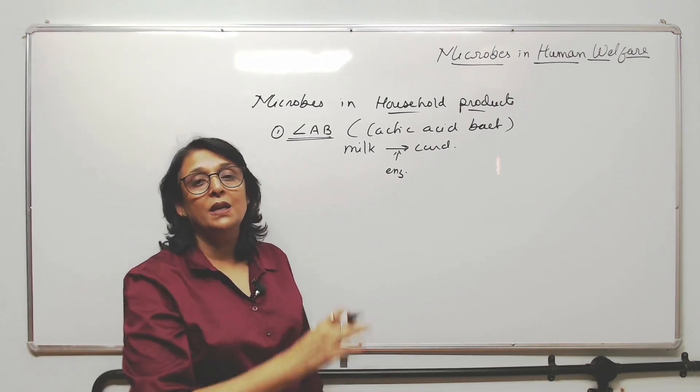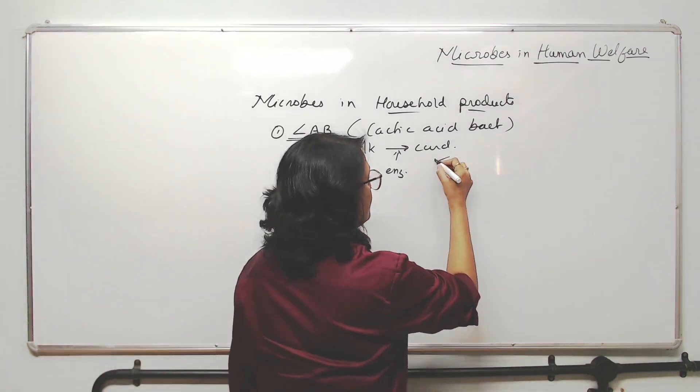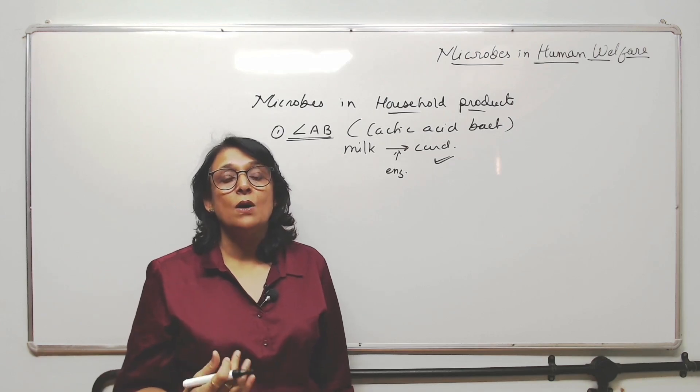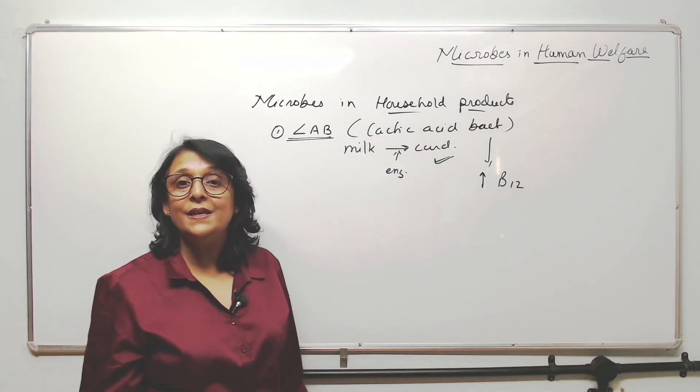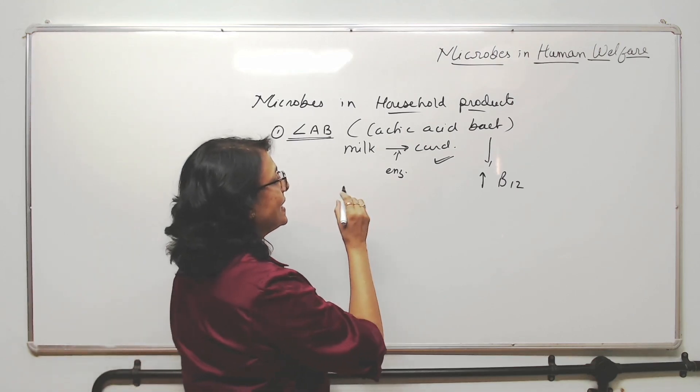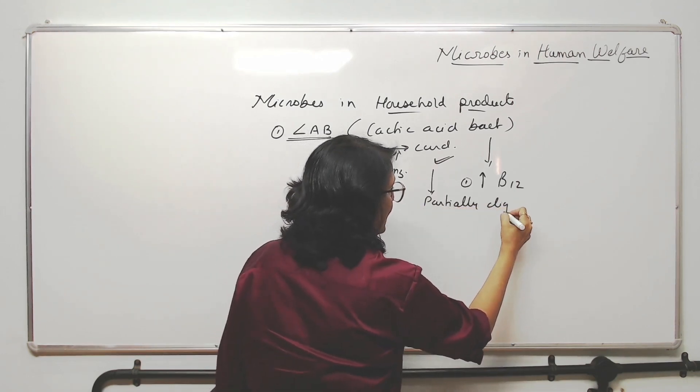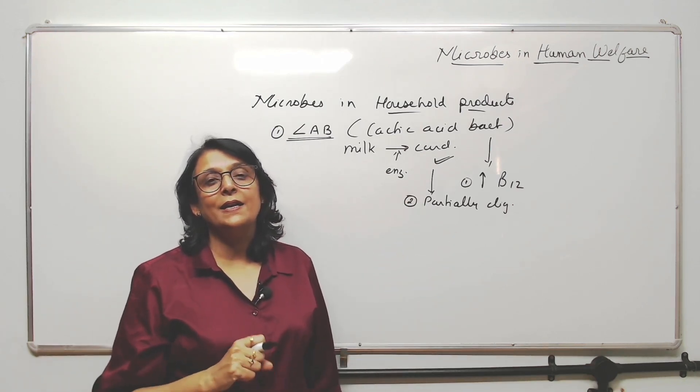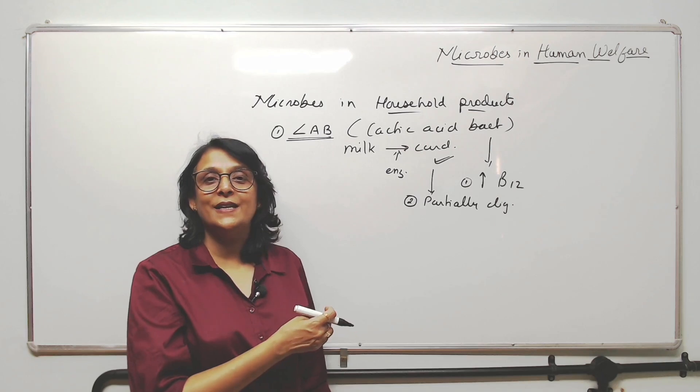Lactic acid bacteria convert milk into curd but they also increase the nutritional value. Curd is better because it is partially digested milk, and secondly these lactic acid bacteria increase vitamin B12, cyanocobalamin, which we need for RBC formation and maturation. Curd is partially digested, so it is easy to break down into simpler molecules. That is why whenever your stomach is upset you take curd instead of milk, because it is partially digested. Half of the process is done.